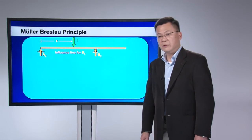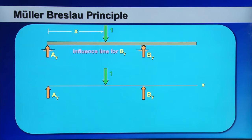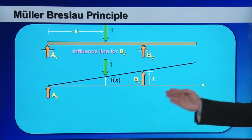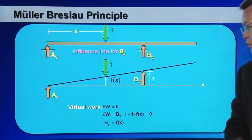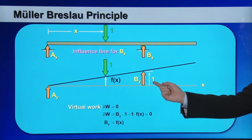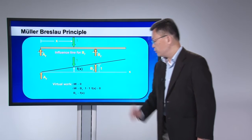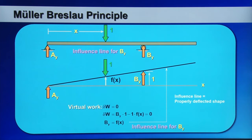Now let me use another example — this time finding the influence line for By. Holding point A stationary, move point B upward by a unit of one. Calculate all the virtual work in this configuration and set it equal to zero. The virtual work is By times 1 minus 1 times Fx. Setting this equal to zero gives By = Fx, confirming that this deflected shape is the influence line for By.